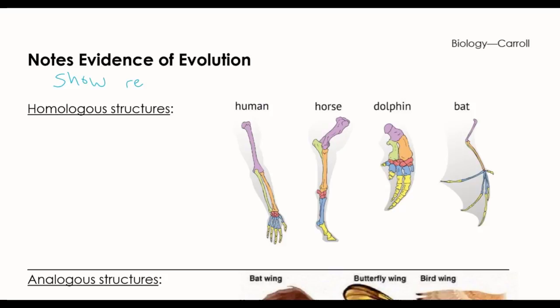So what are scientists trying to do when we're looking at evidence? Really, we are trying to compare structures and see what kind of similarities we can find between them. So we are really looking at those relationships and seeing what we can find.